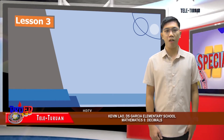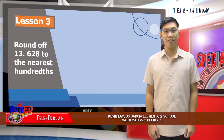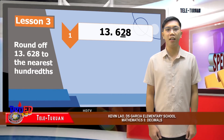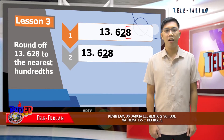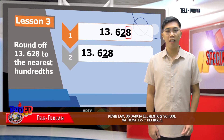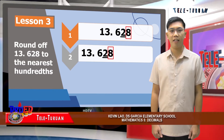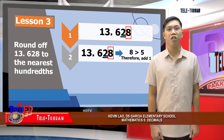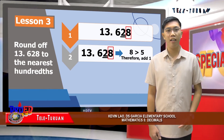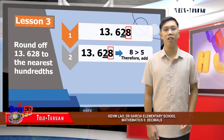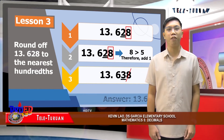Our last topic will be on rounding of decimals. To round a decimal number, we follow certain steps. First, determine the rounding place and the digit to the right of the rounding place. Second, the digit in the rounding place is the one that will either be rounded up or rounded down, depending on the digit on the right. Remember, if the digit to the right of the rounding place is five or greater, add one to the rounding place, while less than five means retaining the digit in the rounding place. Last, do not forget to drop all the digits after the rounding place.